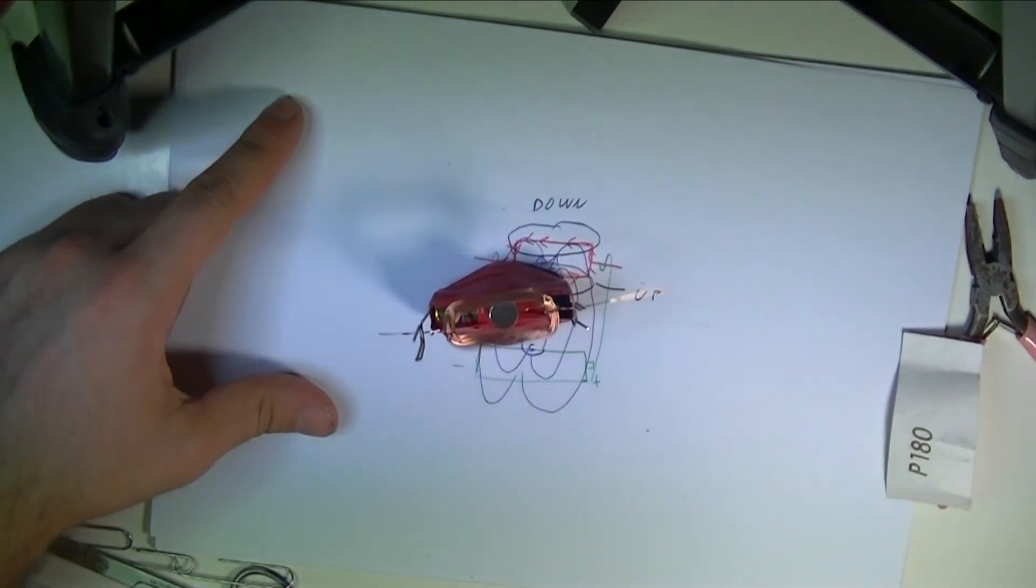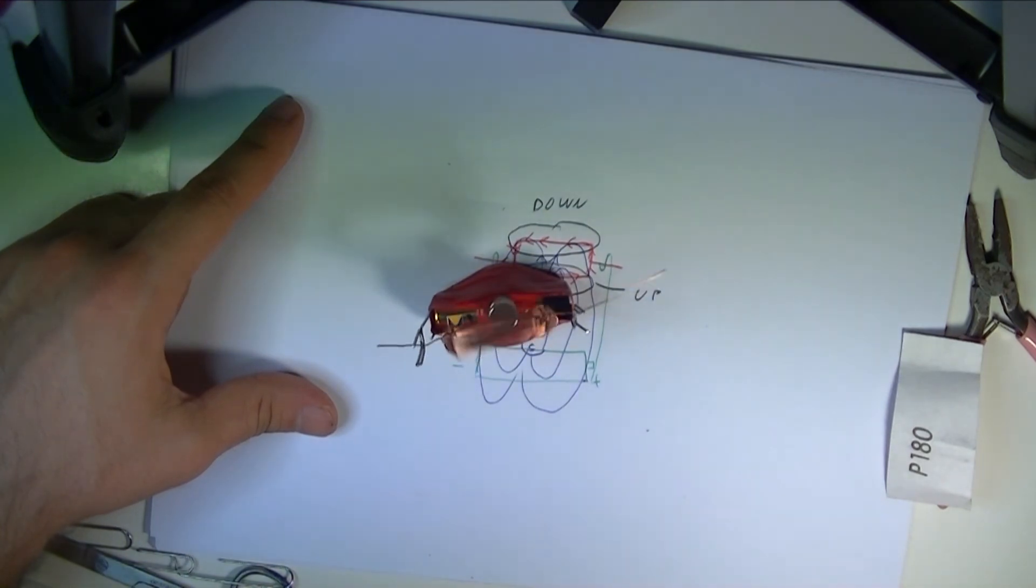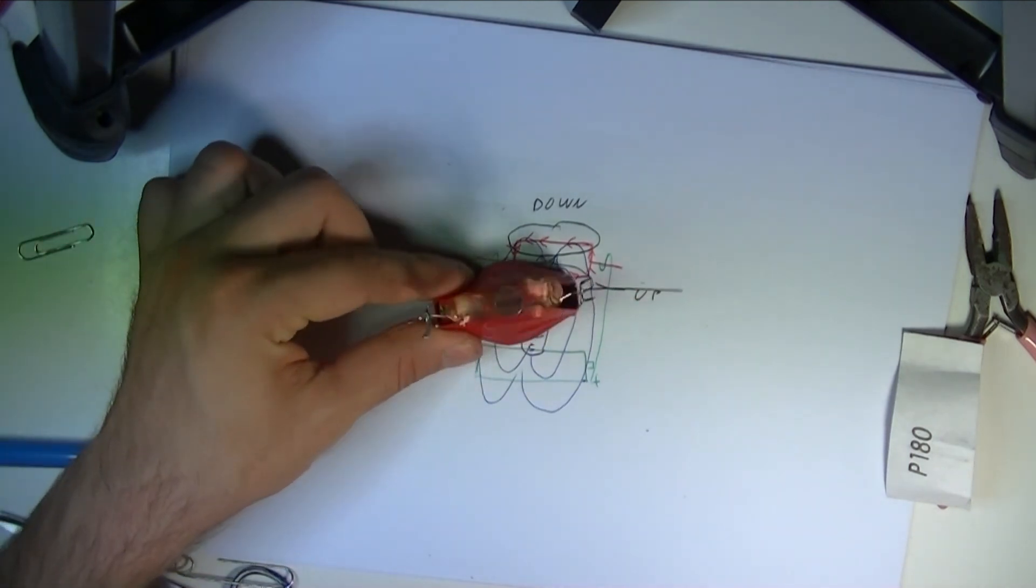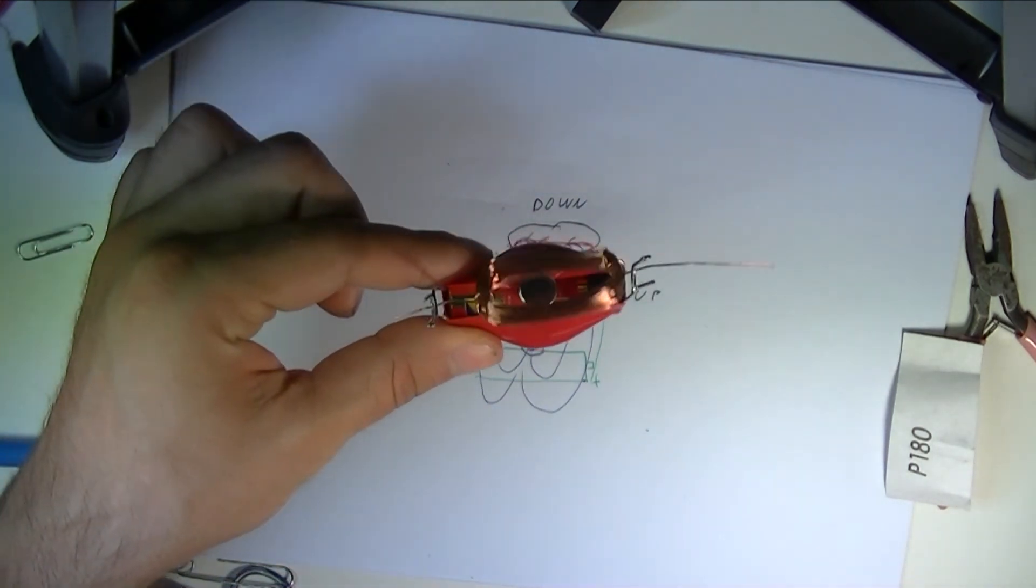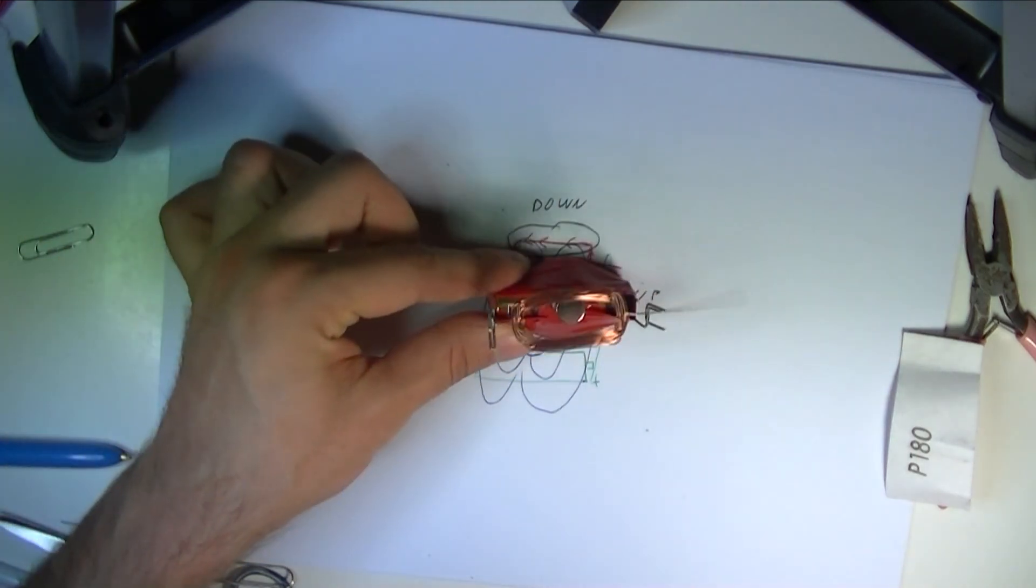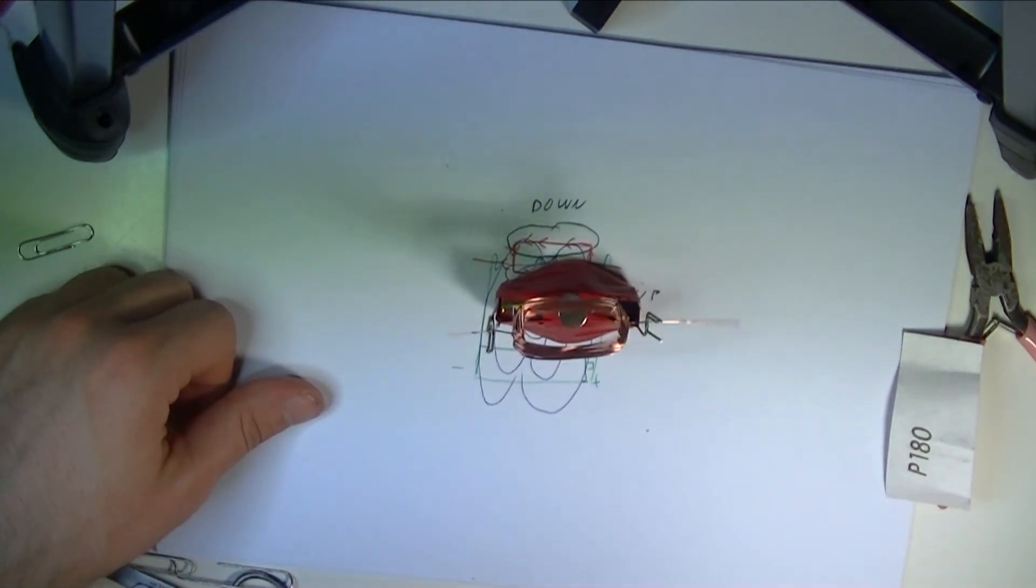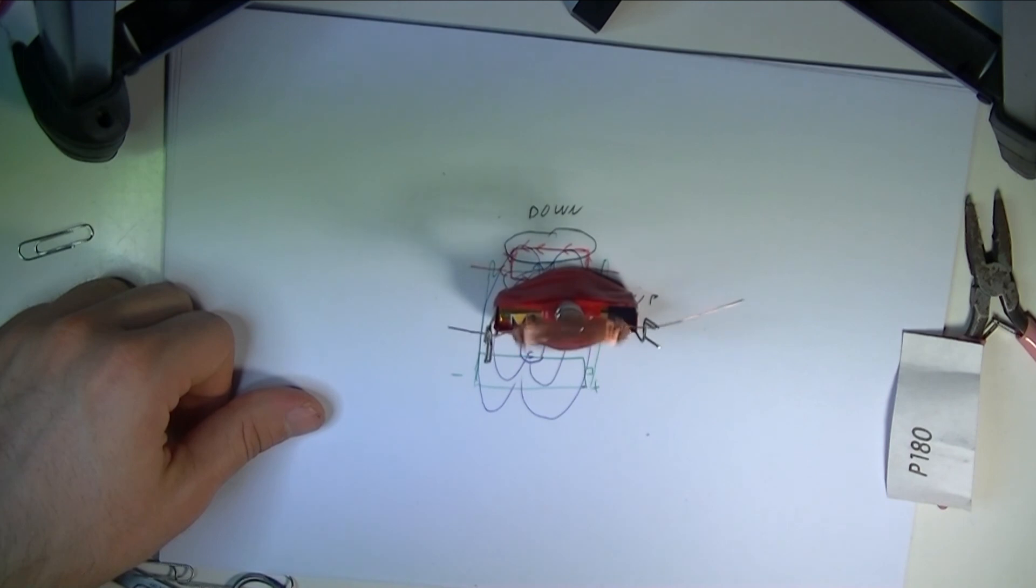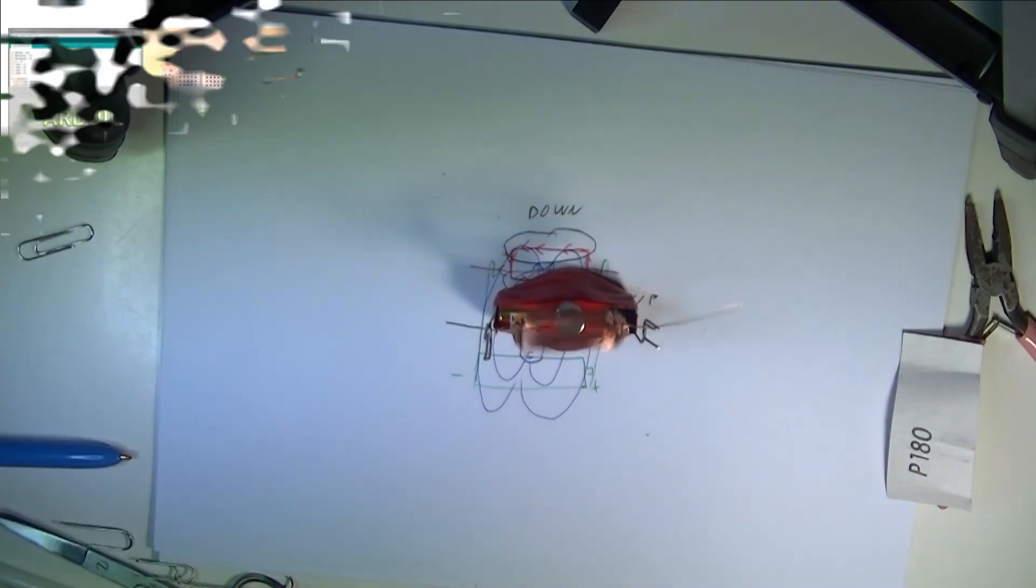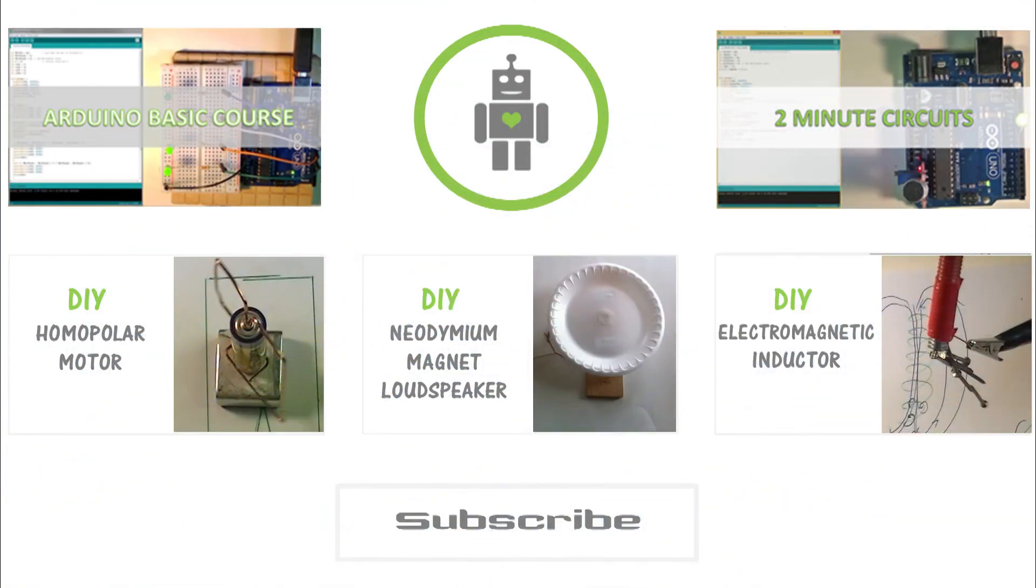There we go spinning very very quickly. That is your DC motor. It's quite stable I can pick it up put it down. It's fantastic your turn to build it.